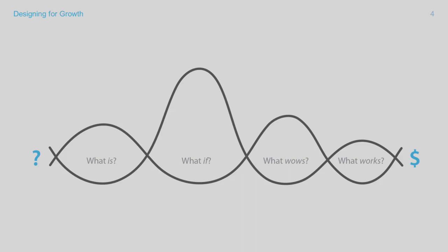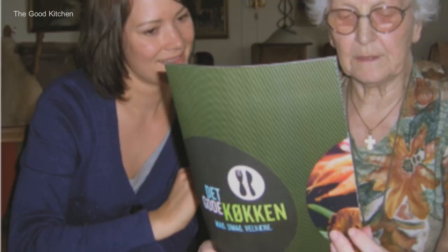We also talked about the kinds of problems that design thinking is especially well-suited to solving. We illustrated its use in practice by an organization, the Good Kitchen, who used it to address the problem of poor nutrition in the elderly through the redesign of a meal delivery service in Denmark.